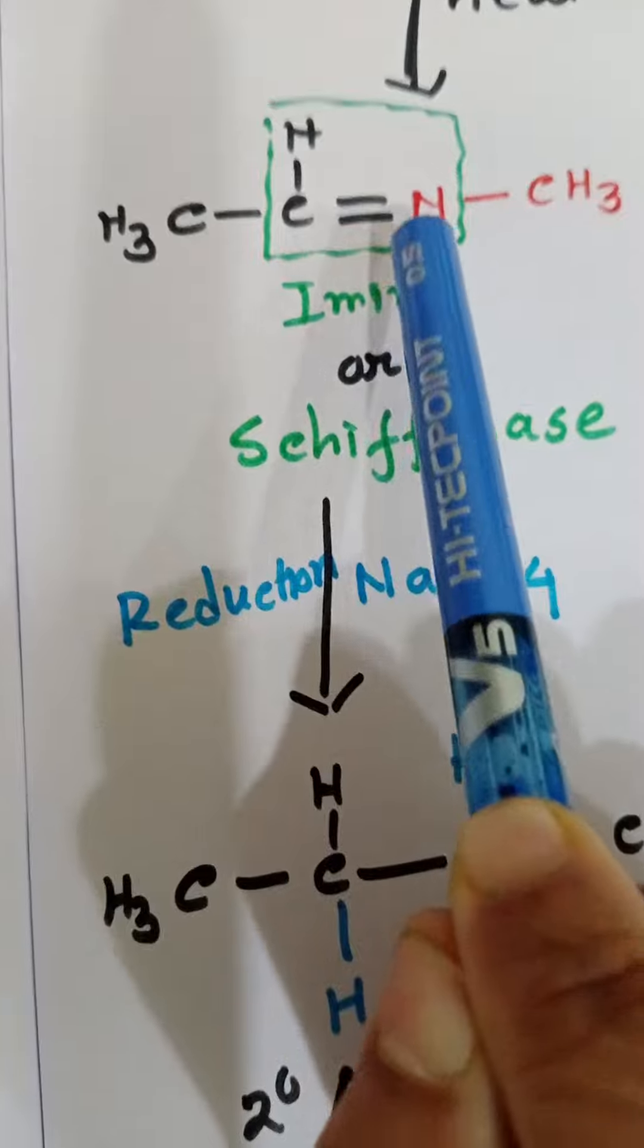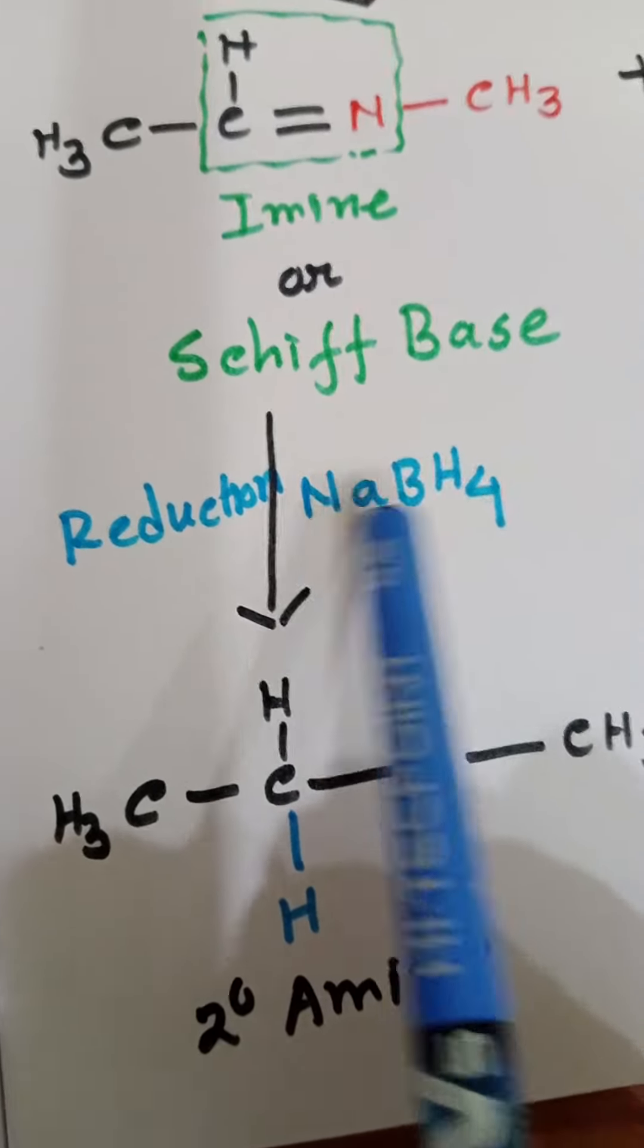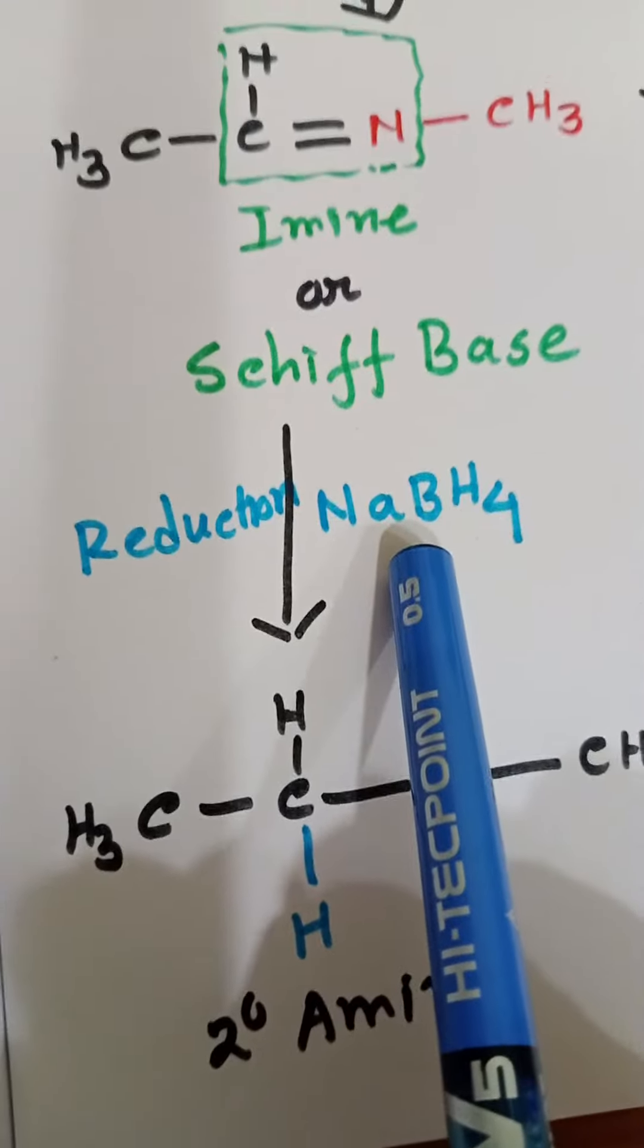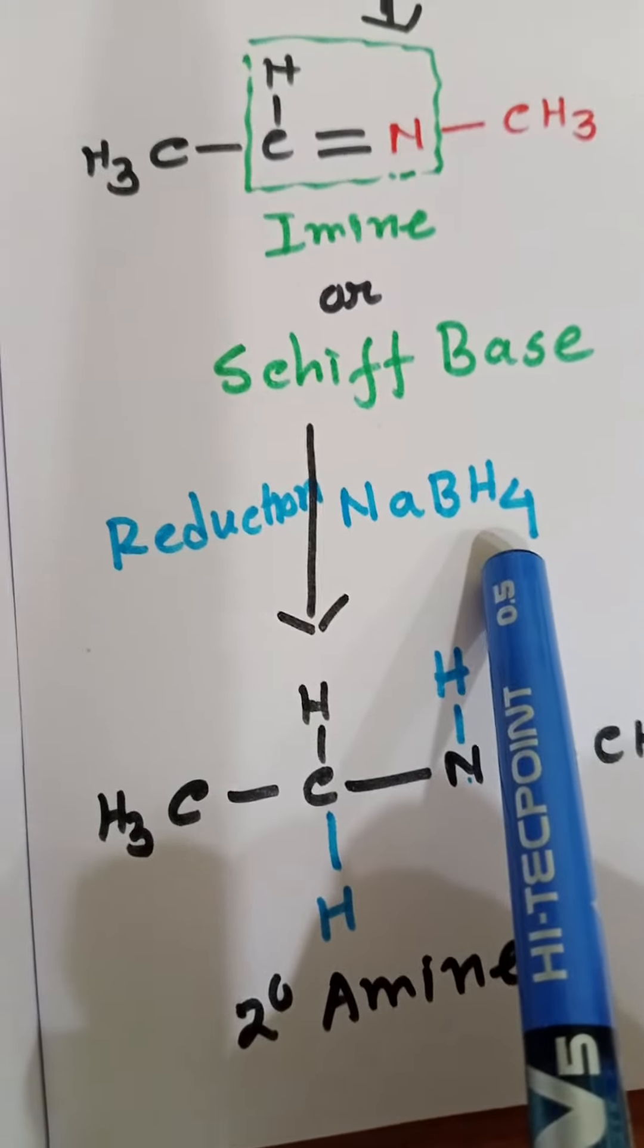When we perform the reduction of imine, we have to use a mild reducing agent like sodium borohydride or sodium cyanoborohydride. How the reduction is happening is very easy to understand.